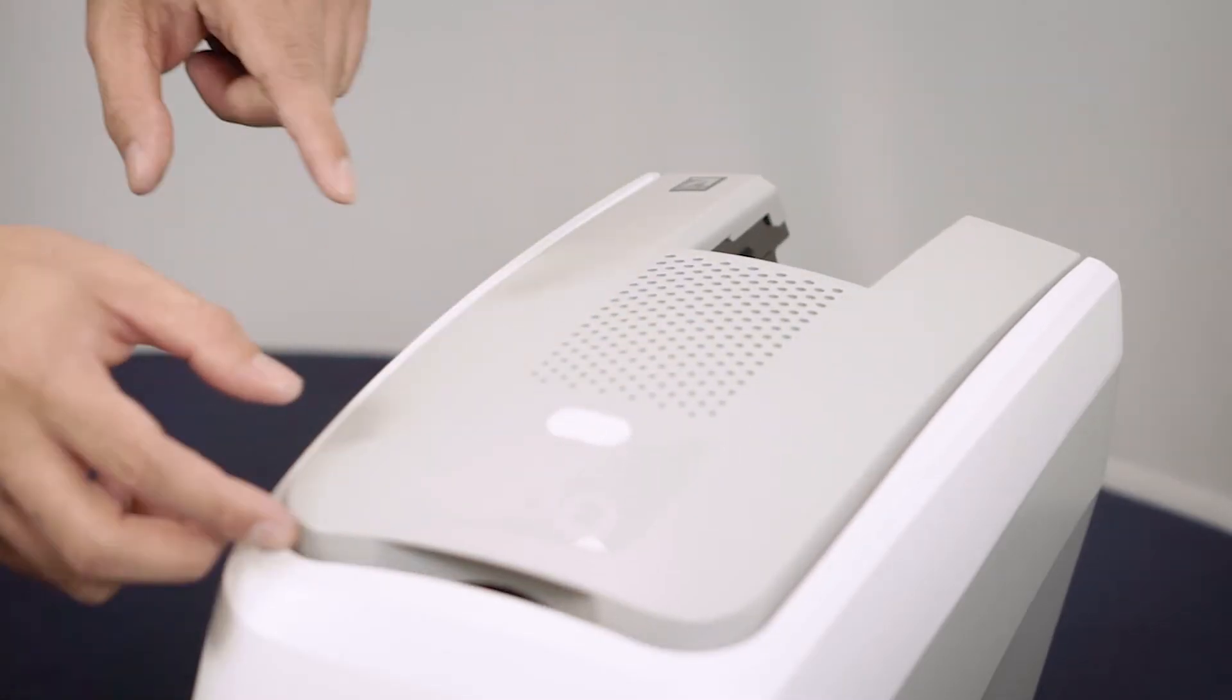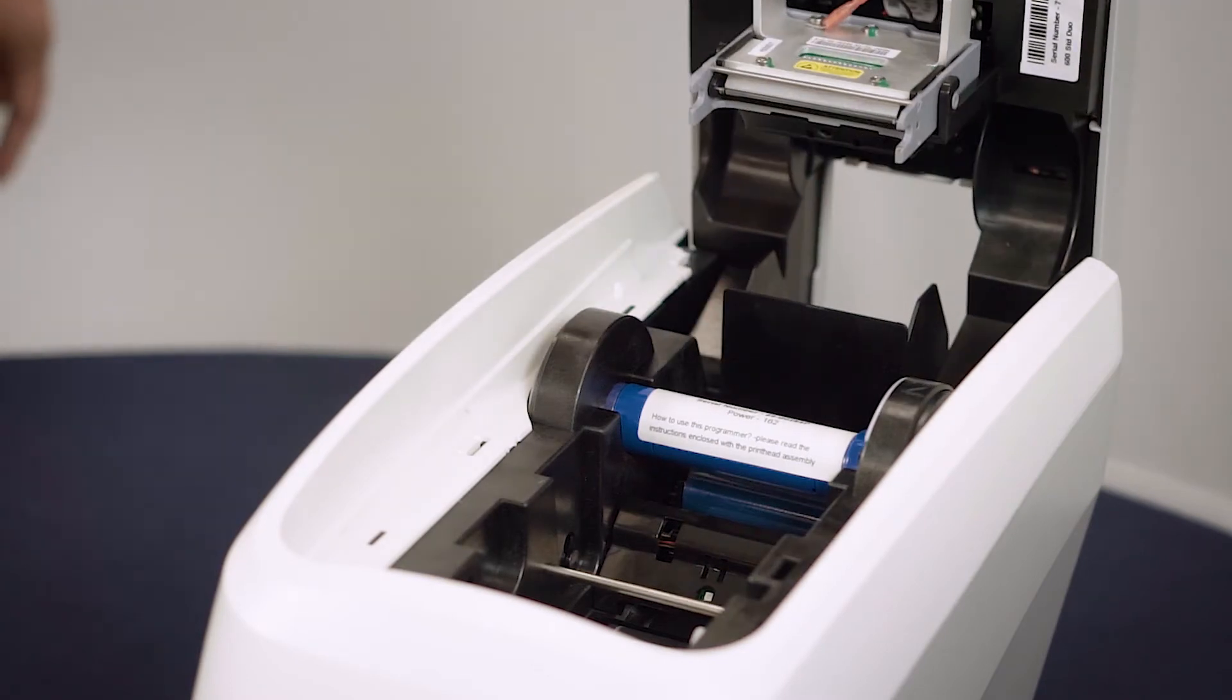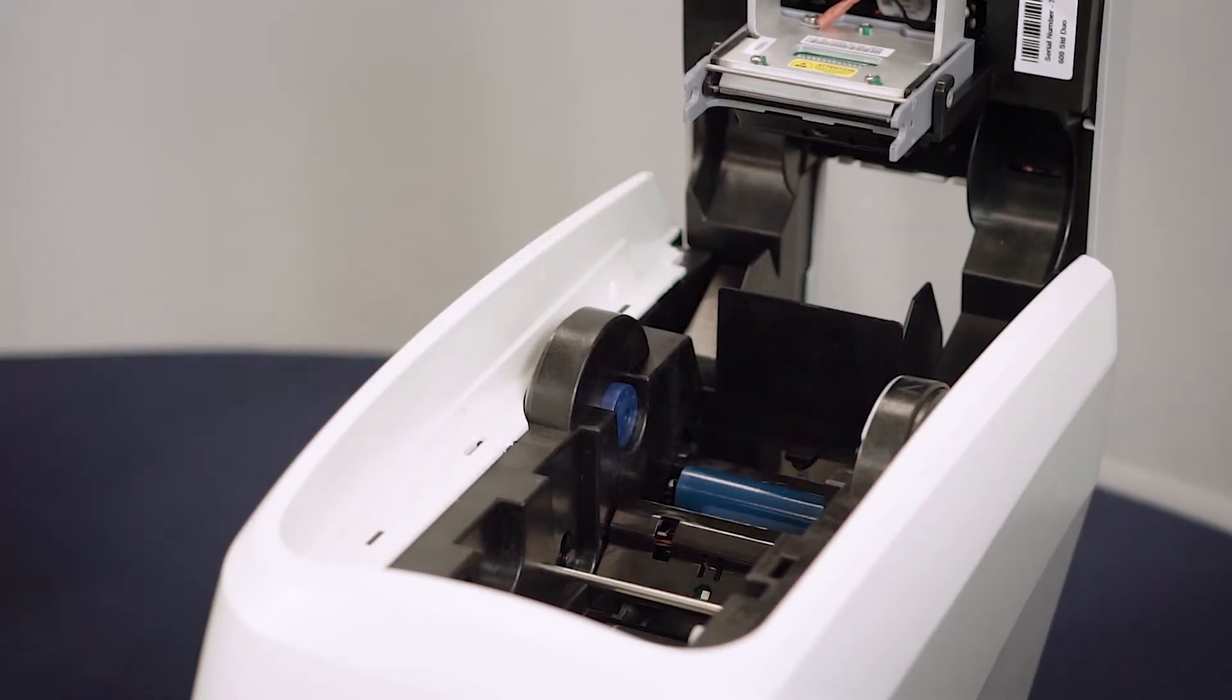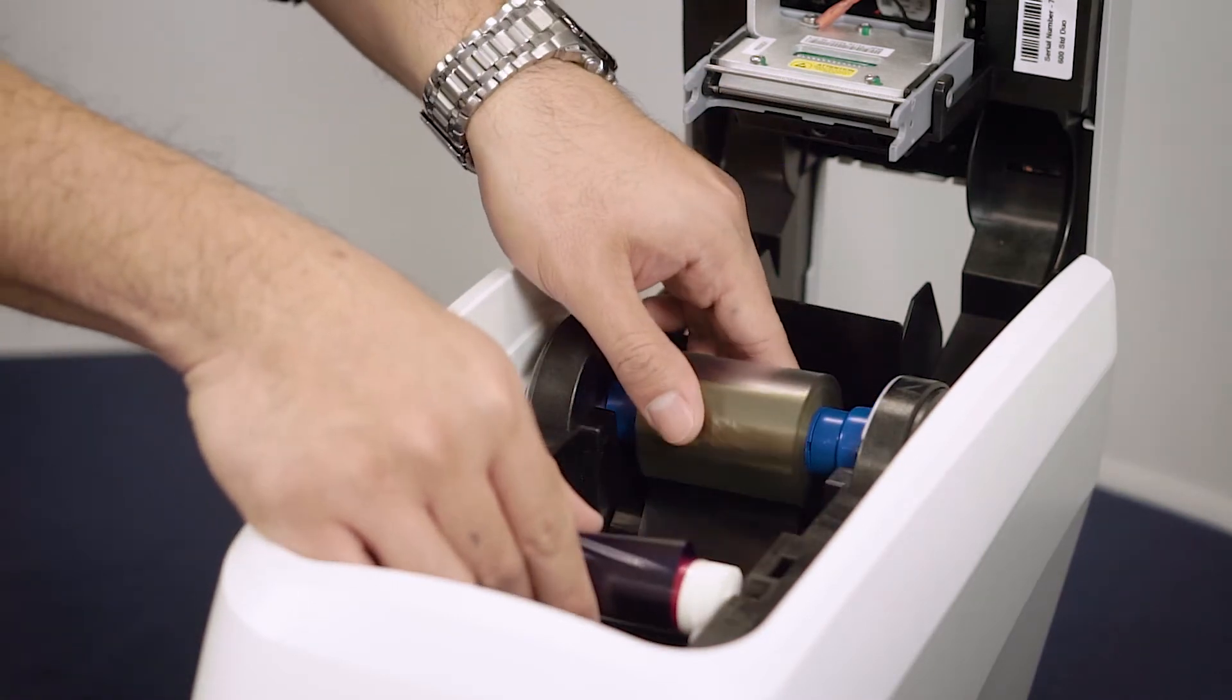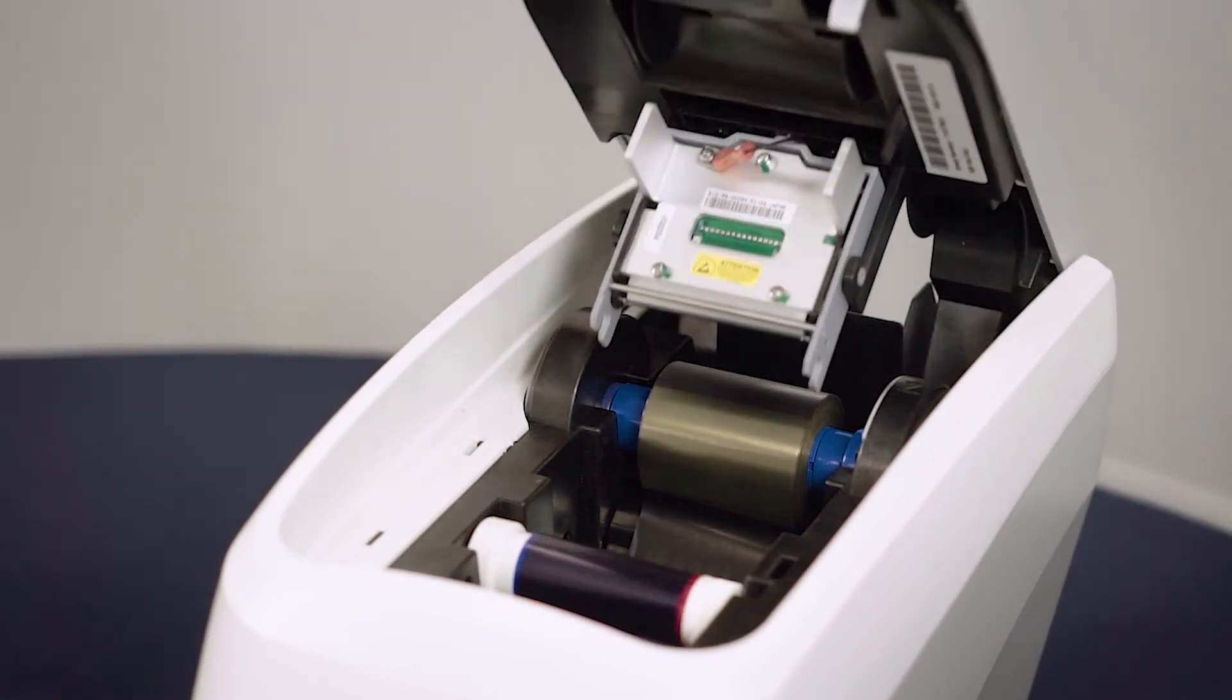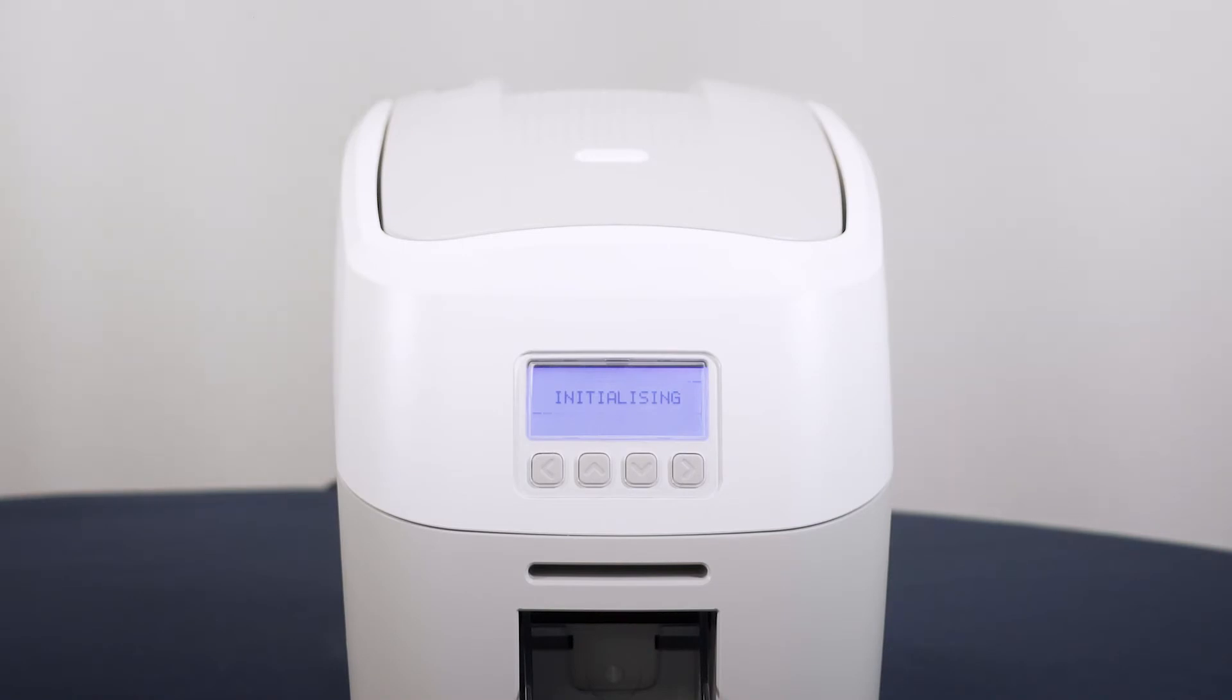Open the lid. Remove the print head calibration programmer and put the die film back in place. Close the lid. The printer will initialize again and return to the main menu to continue use.